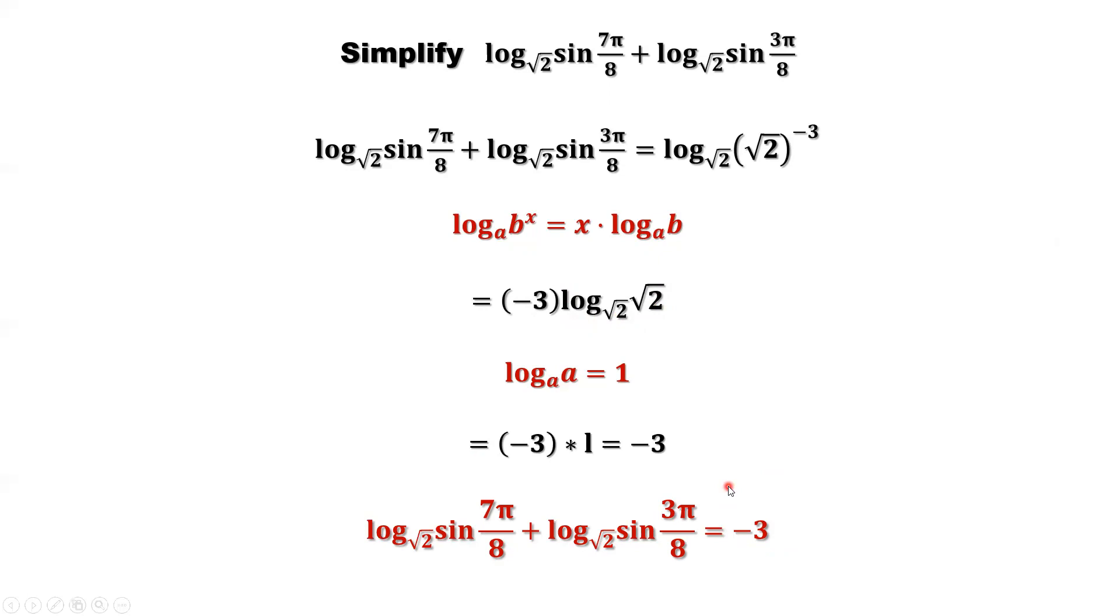So here, for this problem, we use several formulas. The first formula we used, that's sum of 2 logs equals log of the product, if they are having the same base. Second formula we used, that's a double-angle formula. Sine 2α equals 2 sine α times cosine α. Then we use the formula converting sine into cosine. Sine half π minus α equals cosine α. Then we use the formula log of b to the power x. We can bring x from inside to outside downstairs. Equals x times log b. The last formula we used, that's log a with the same base a here. Equals 1.